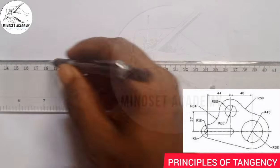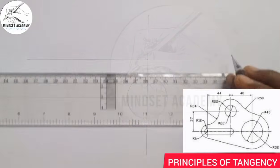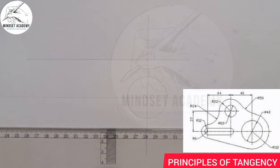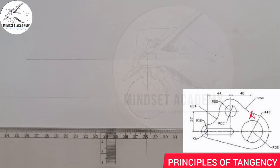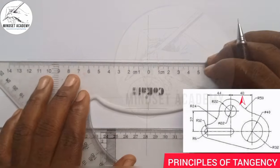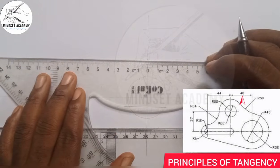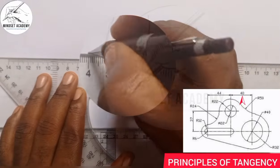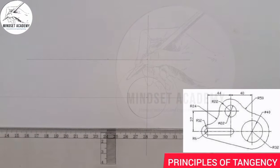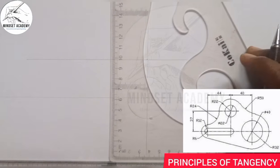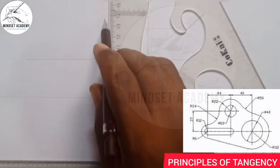Just a faint line. Now the next thing is from this point — which my arrow is pointing to — the next center of the circle is given as 40. So I will measure 40 from this point, from 0 to 40, and I will draw another vertical line on that point.